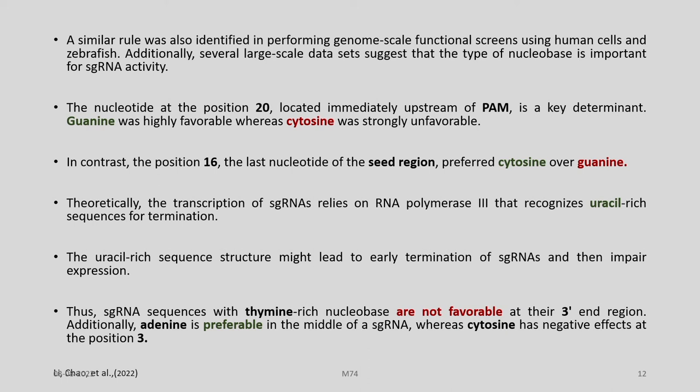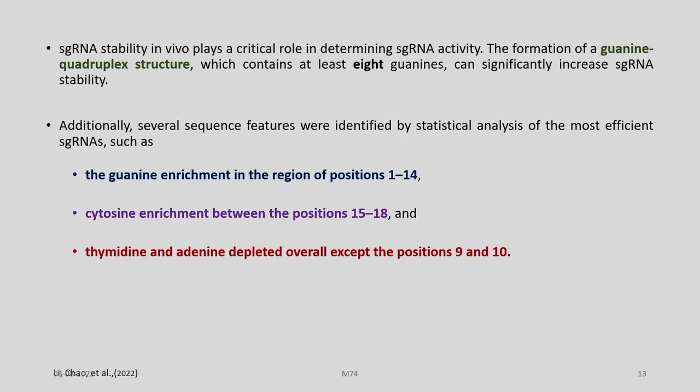In contrast, position 16, the last nucleotide of the seed region, preferred cytosine over guanine. Theoretically, the transcription of sgRNA relies on RNA polymerase III, which recognizes uracil-rich sequences for termination. The uracil-rich sequence structure might lead to early termination of sgRNAs and impair expression. Thus, sgRNA sequences with thymine-rich nucleobases are not favorable at their 3' end region. Additionally, adenine is preferable in the middle of sgRNA, whereas cytosine has negative effects at position 3.